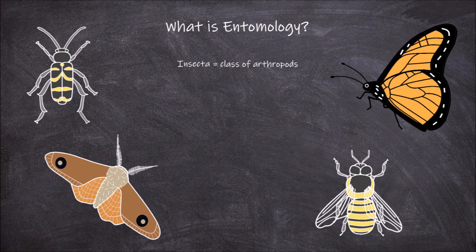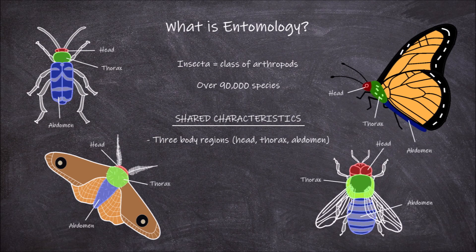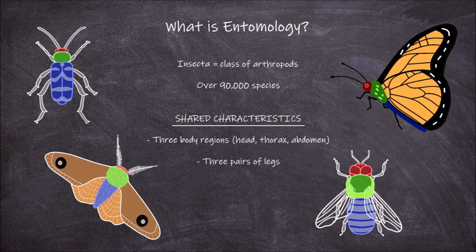The Insecta are a class of arthropods and currently contain over 90,000 described species. Members of the class Insecta have a unique set of shared characteristics. They all have three body regions: a head, a thorax, and an abdomen. They also all have, in the adult form, three pairs of legs attached to the thorax — so six legs in total. They also possess a single pair of antennae attached to the head region.